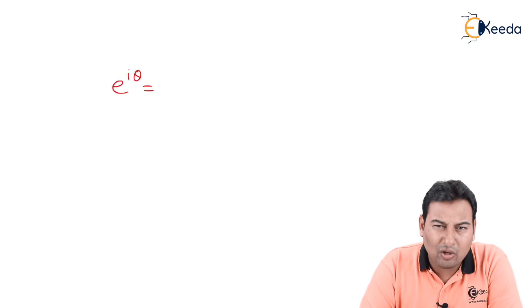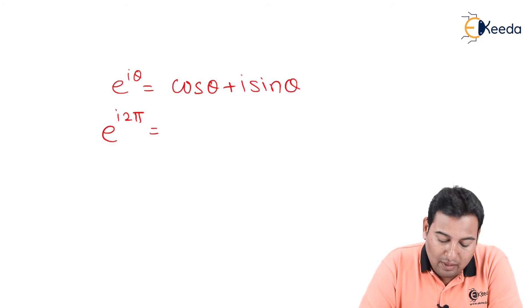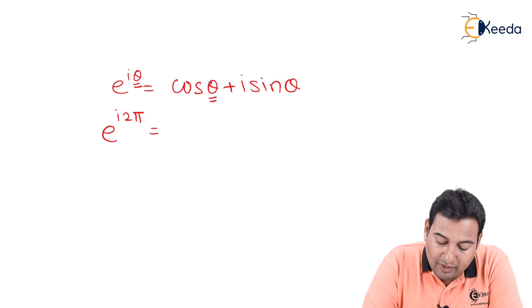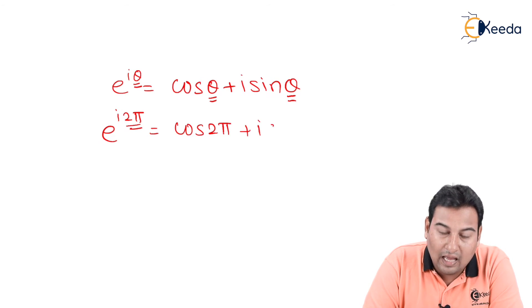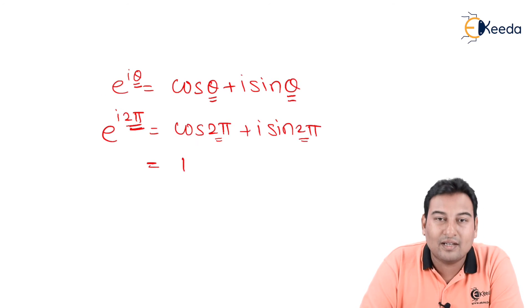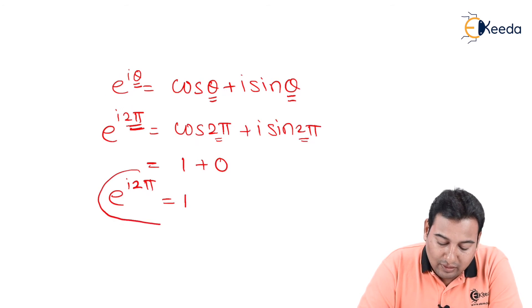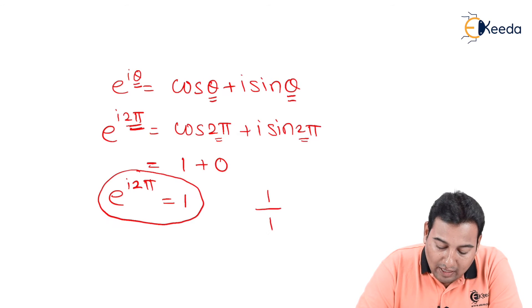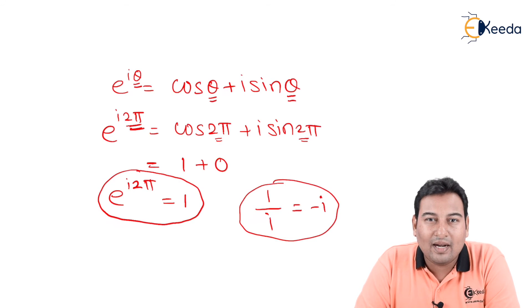Before simplifying, recall Euler's formula: e^(iθ) = cos θ + i sin θ. So e^(2πi) = cos 2π + i sin 2π = 1 + 0 = 1. Also recall that 1/i = −i, since multiplying numerator and denominator by i gives i/i² = −i. These two results are needed for the final simplification.